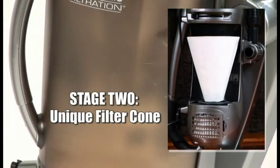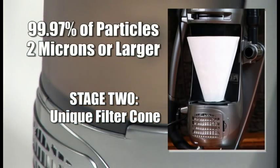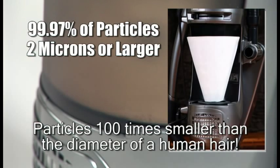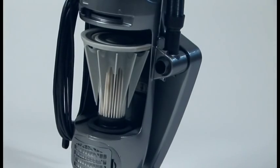The filter cone is so effective at filtering dust and dirt that it removes 99.97% of the particles in the air down to two microns. Those are particles over 100 times smaller than the diameter of a human hair. But the filtration is just beginning.